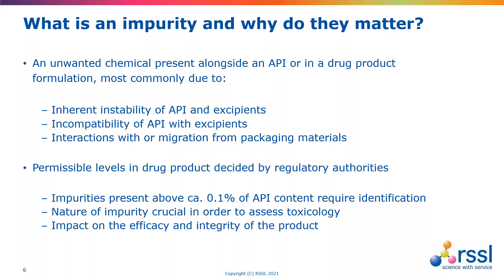Why do impurities genuinely matter? Chemical reactions do not always go to 100% efficiency — in fact, most of the time they don't — and side reactions will frequently occur. Compounds like the API and excipients in a pharmaceutical product can degrade, especially over time or under certain physical conditions. Those compounds can also react with each other to generate a wide variety of compounds, and it's these resulting impurities relative to the product that need to be identified and characterized.